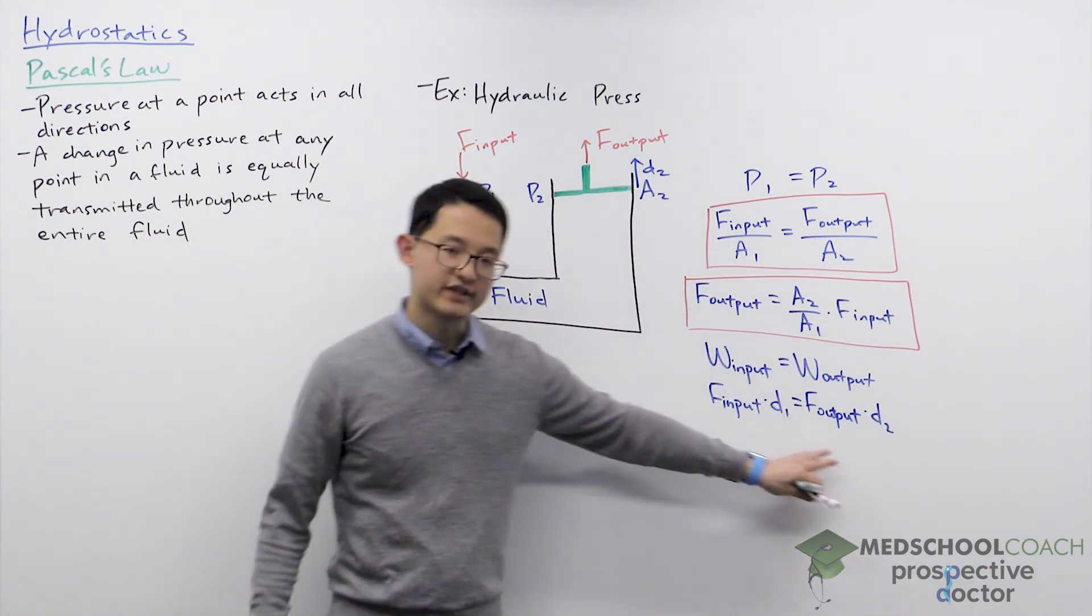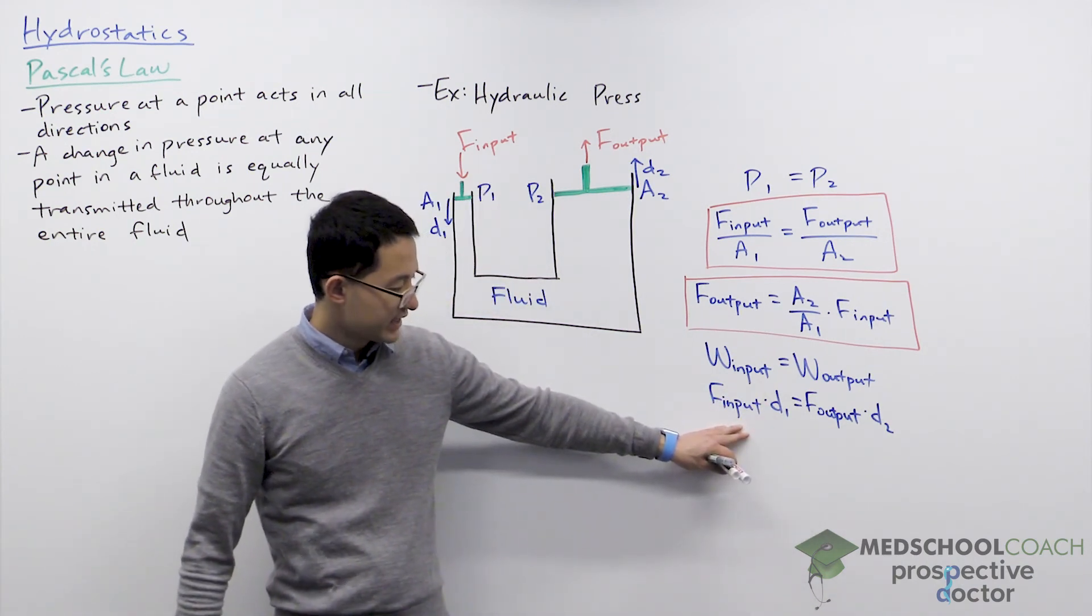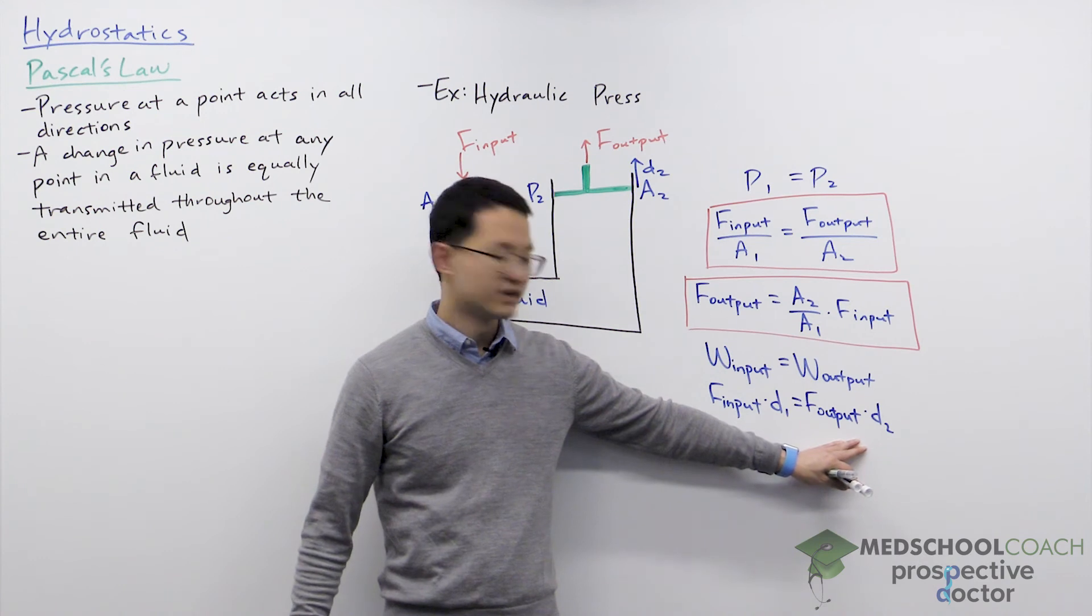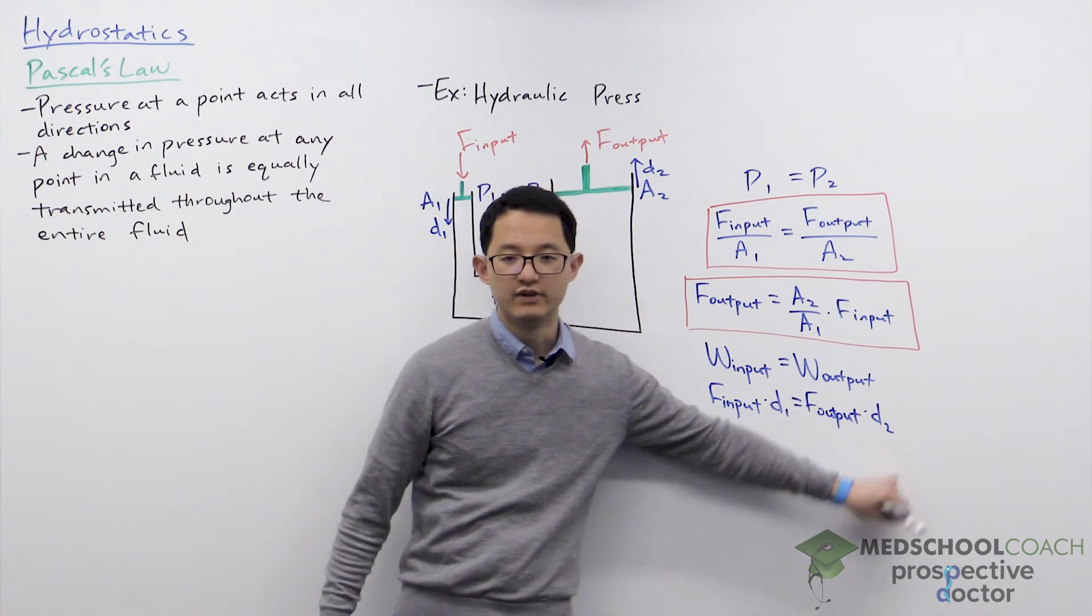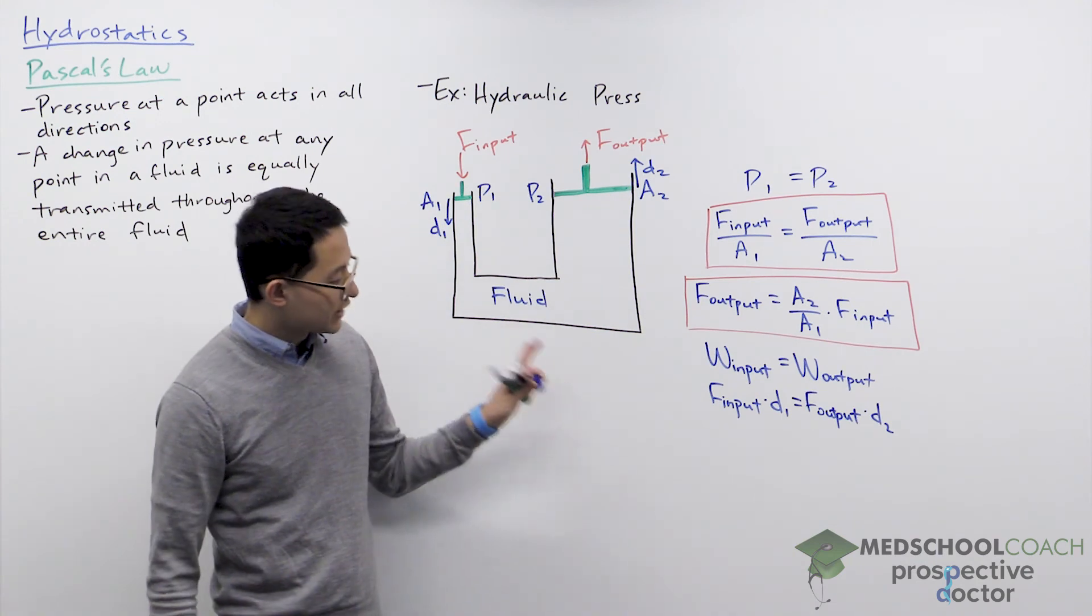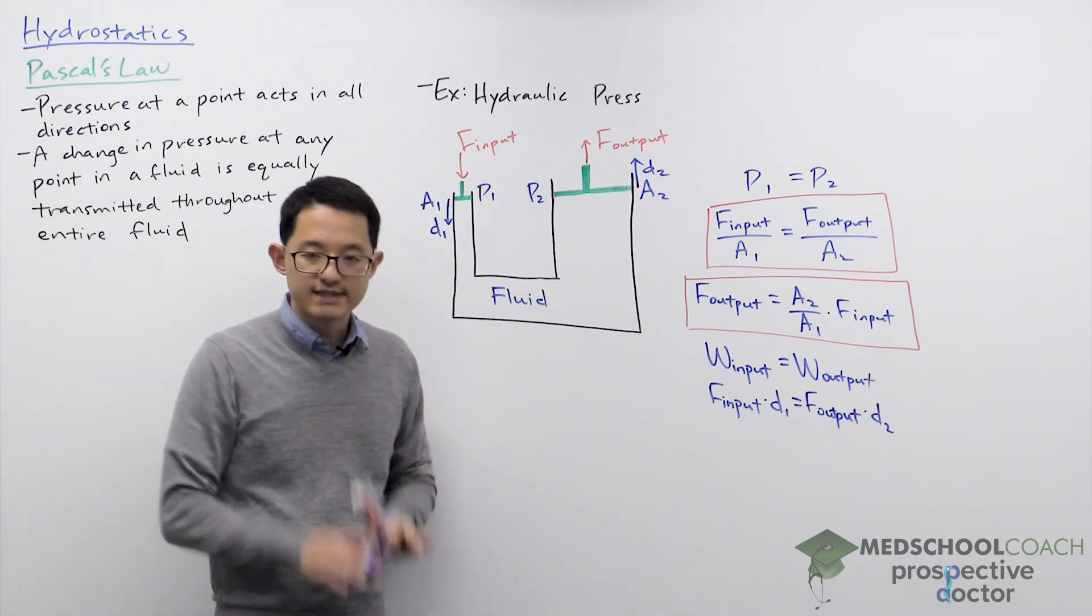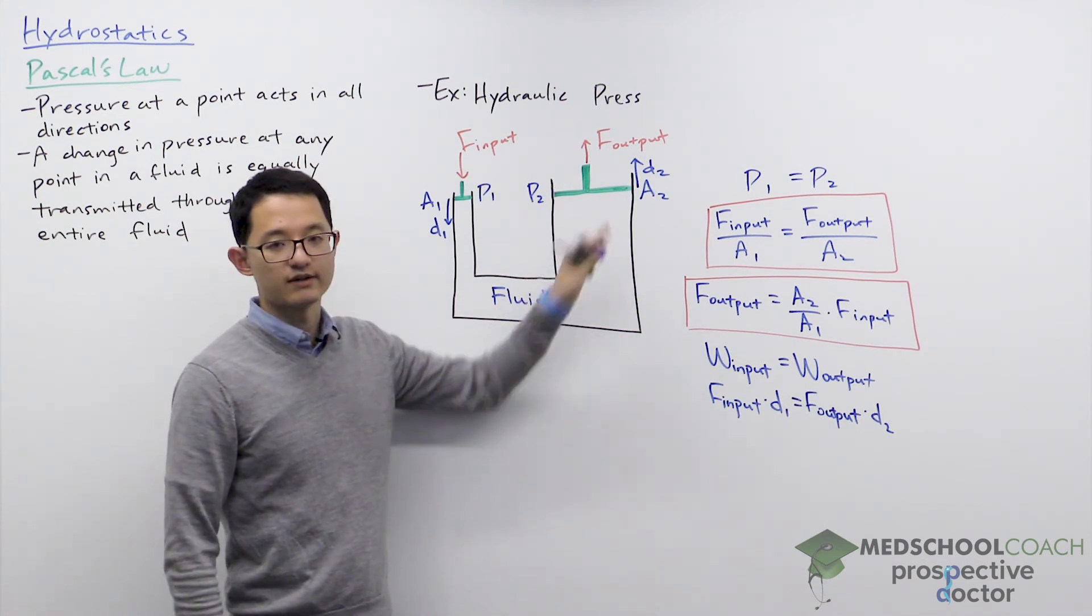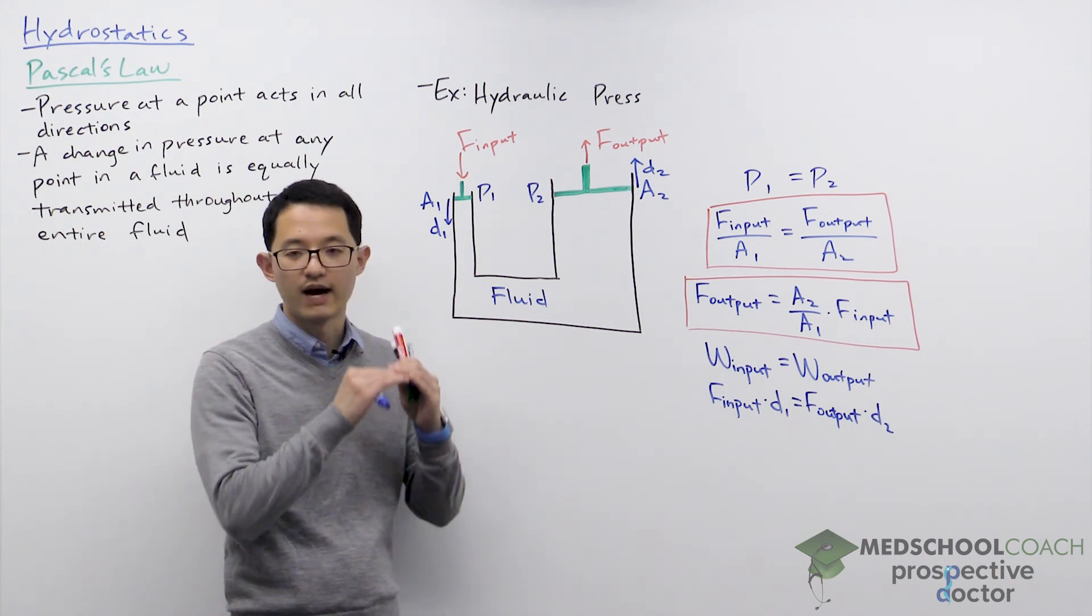And what you should be able to recognize from this equation is since the input force is less than the output force, then D1 has to be greater than D2. Meaning that with this hydraulic press, when you push down some distance, you get a greater force on the other end, but the piston also moves a much smaller height.